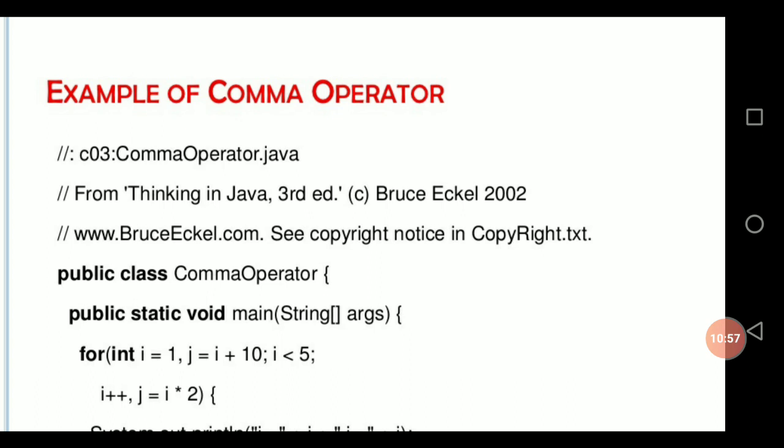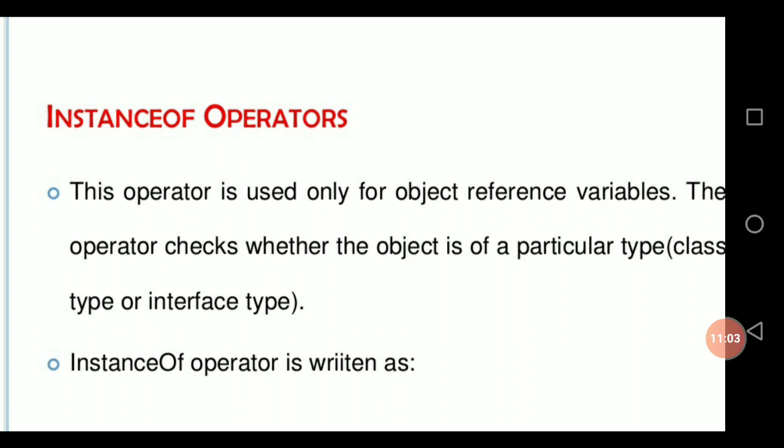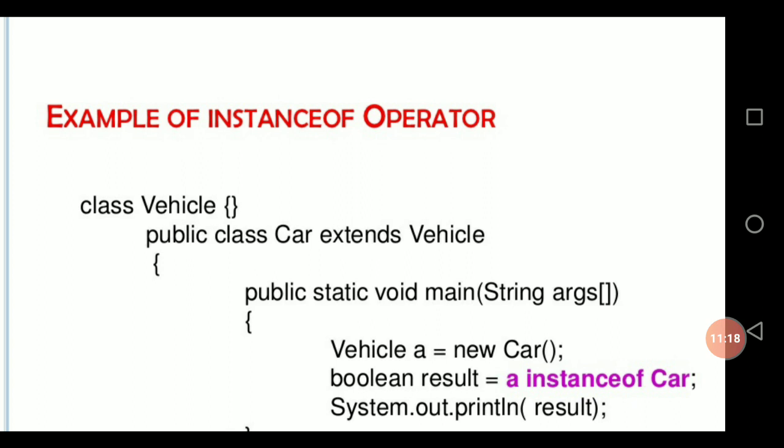The next one is called the instanceof operator. This operator is only for object reference variables. The operator checks whether the object is of a particular type. Here is an example of instanceof: 'a instanceof Cat'. This is the example of instanceof operator.